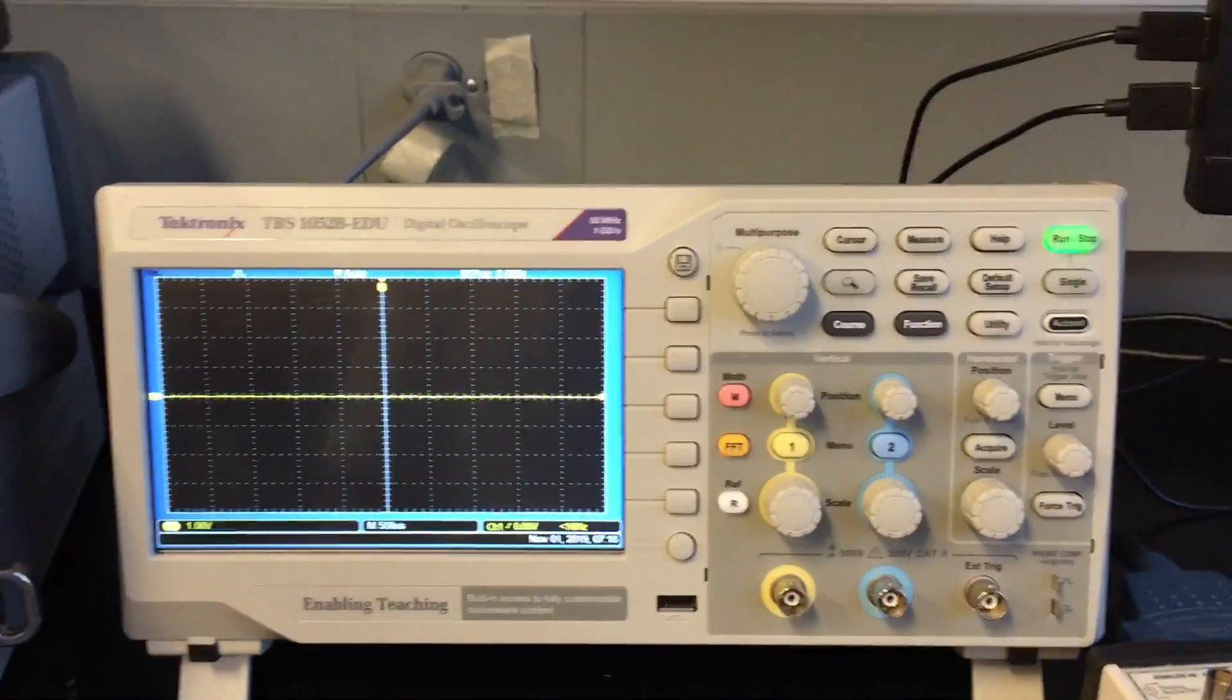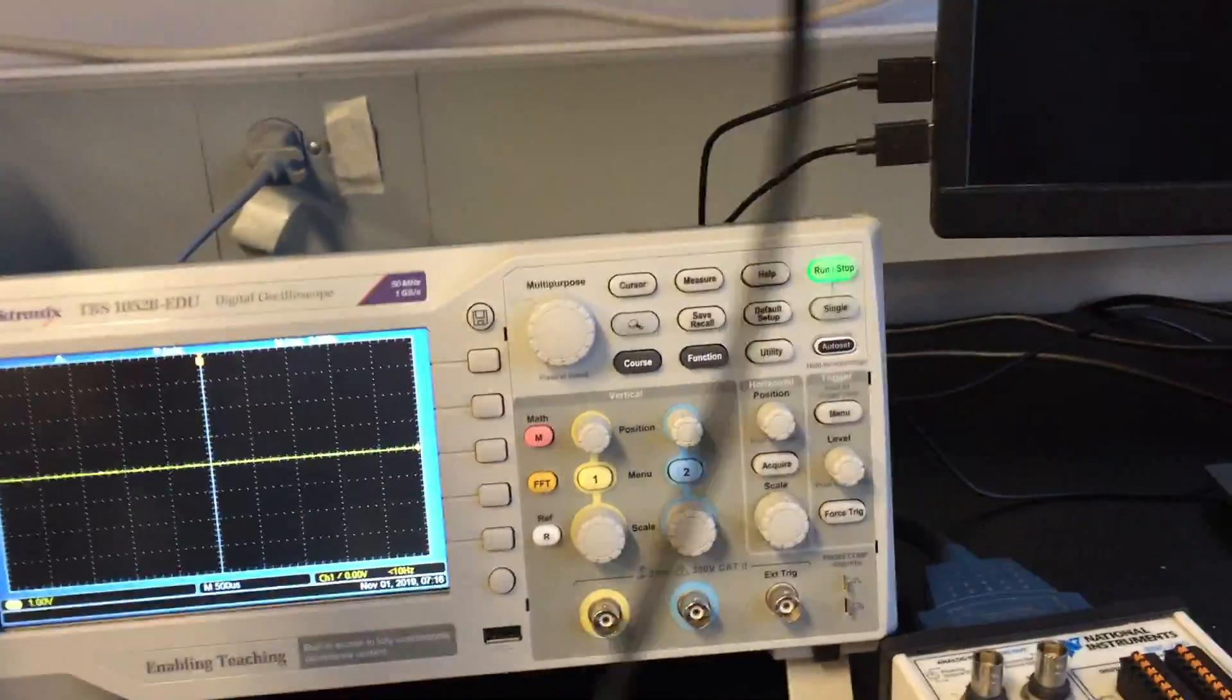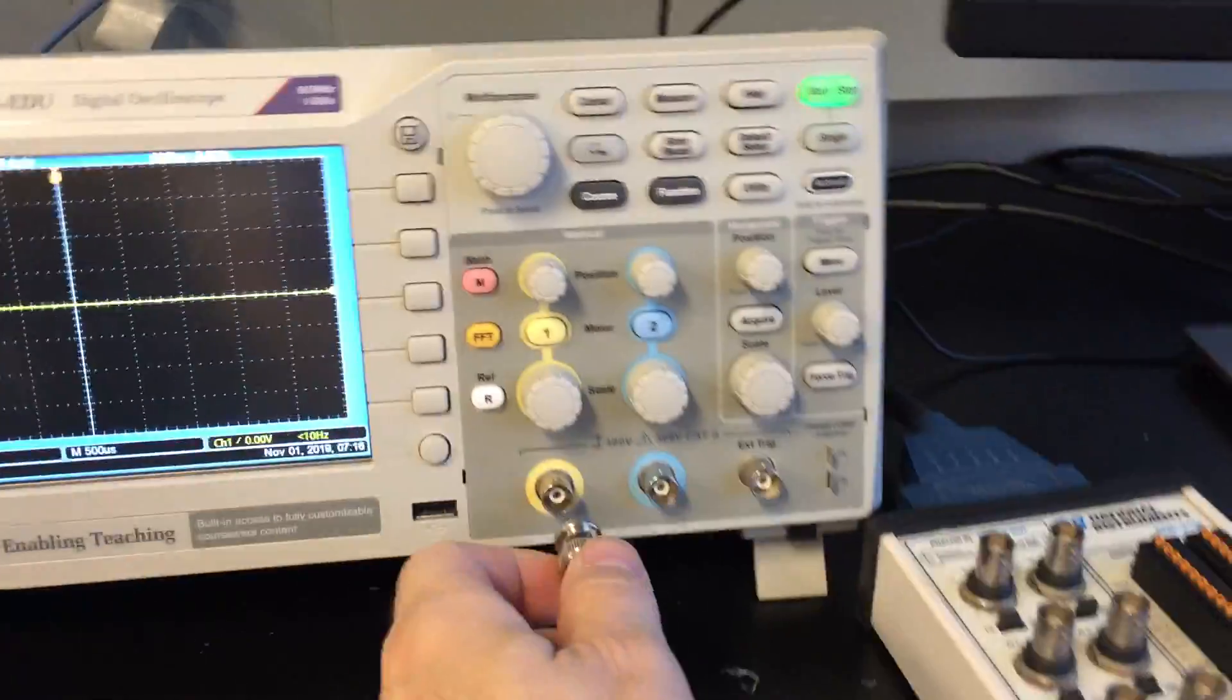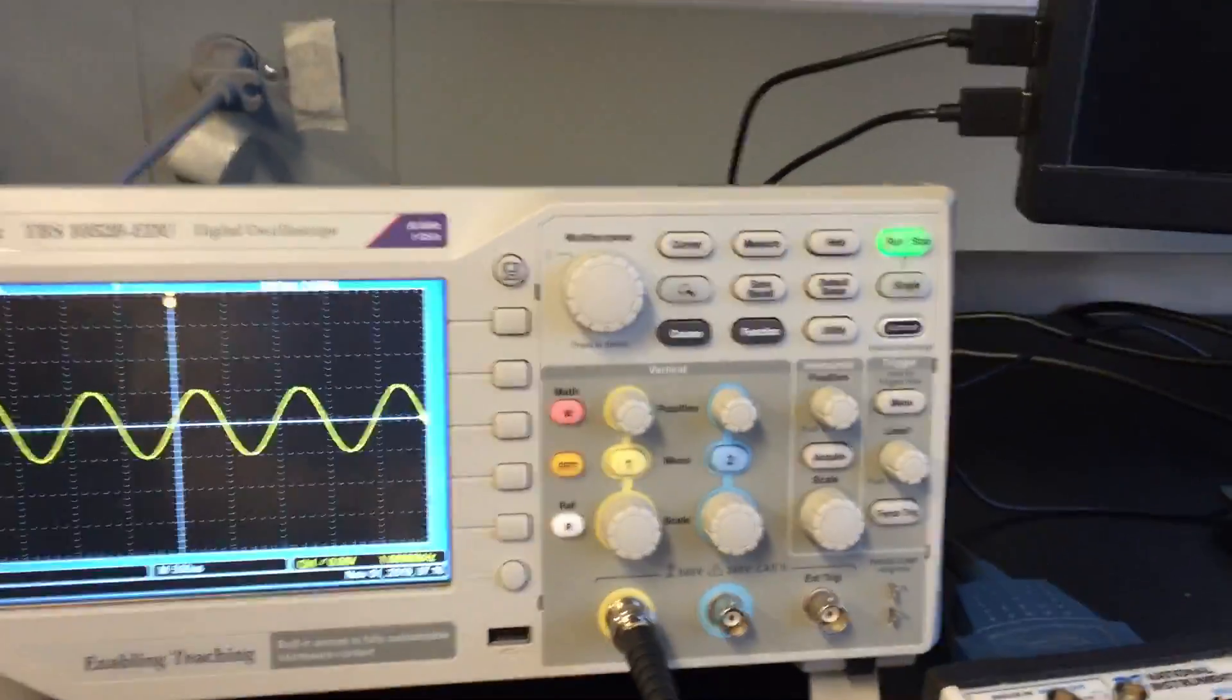So now that I have that set up, now I connect my signals. Say I'm going to connect from a function generator and then go into my channel one of my scope right there. And look at that, I have a waveform.